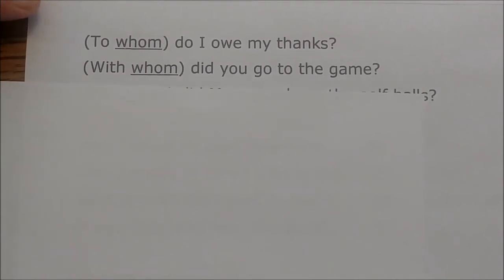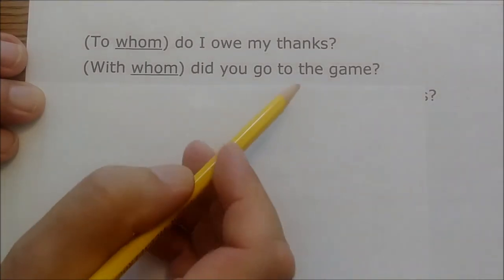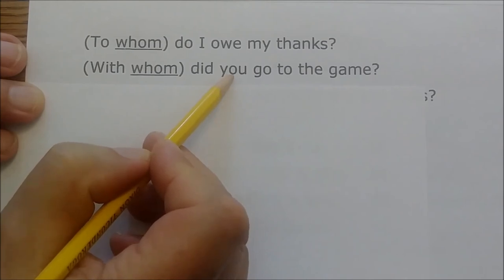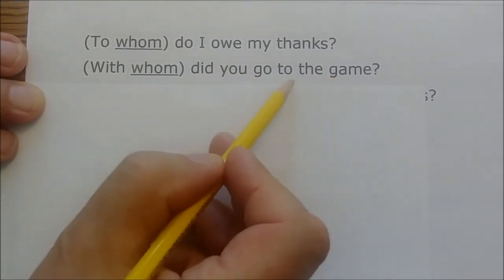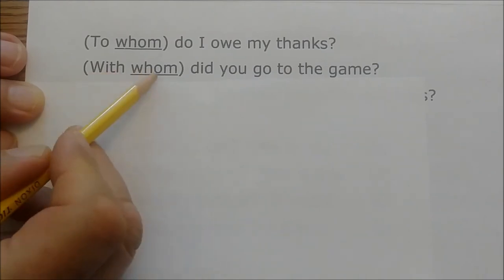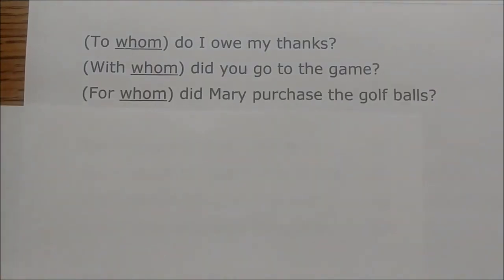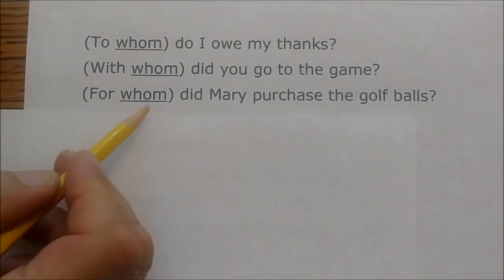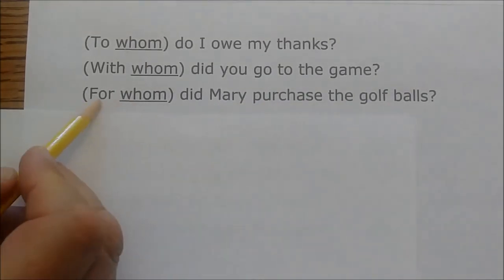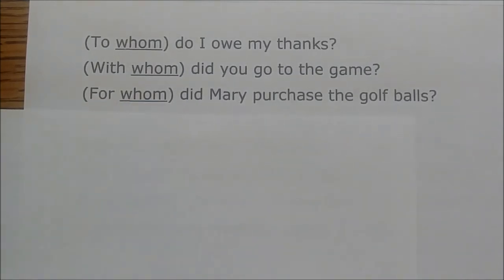'With whom did you go to this game?' — you is the subject, did go is the verb, 'to the game' is a prepositional phrase, and 'with whom' is another prepositional phrase — with is a preposition, so whom must be the object of the preposition. Correct. 'For whom did Mary purchase the golf balls?' — for is a preposition, so whom must be in the object form. Whom is correct.